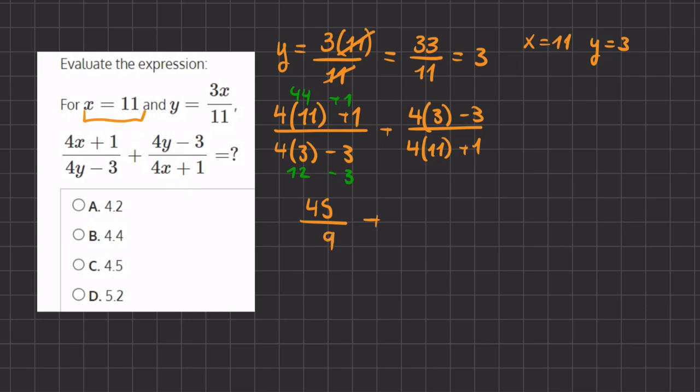Plus our second fraction. Here we have 12 minus 3, which gives us 9, divided by 4 times 11, which is 44, plus 1, which gives us 45.